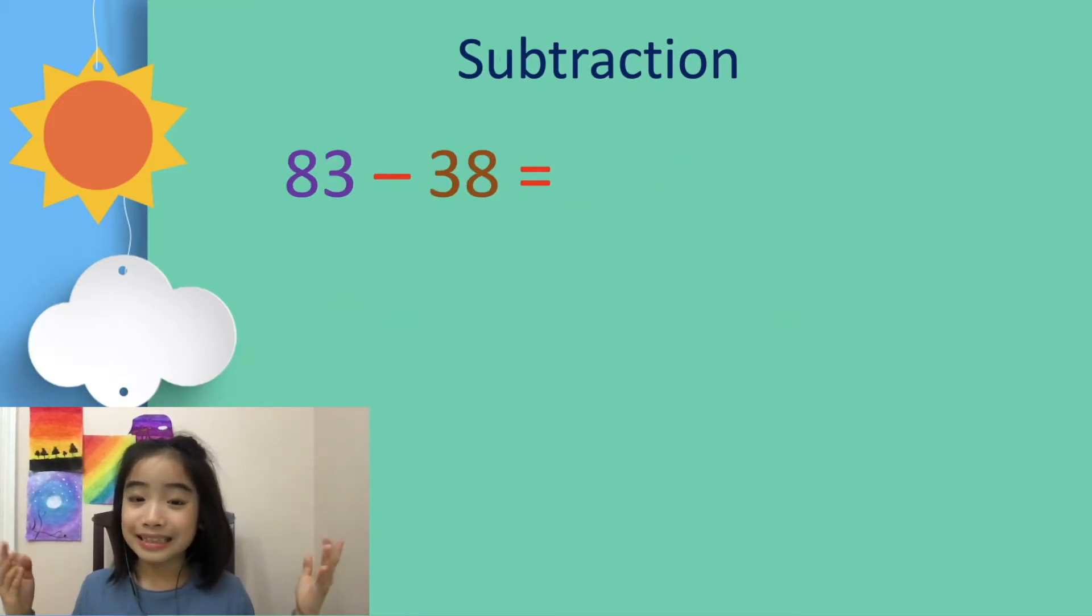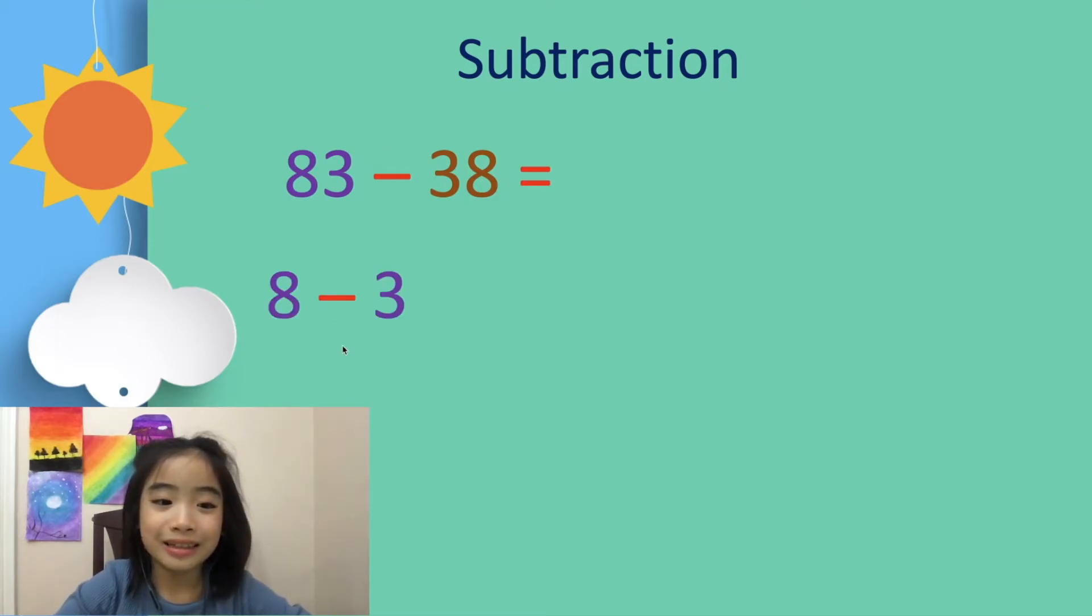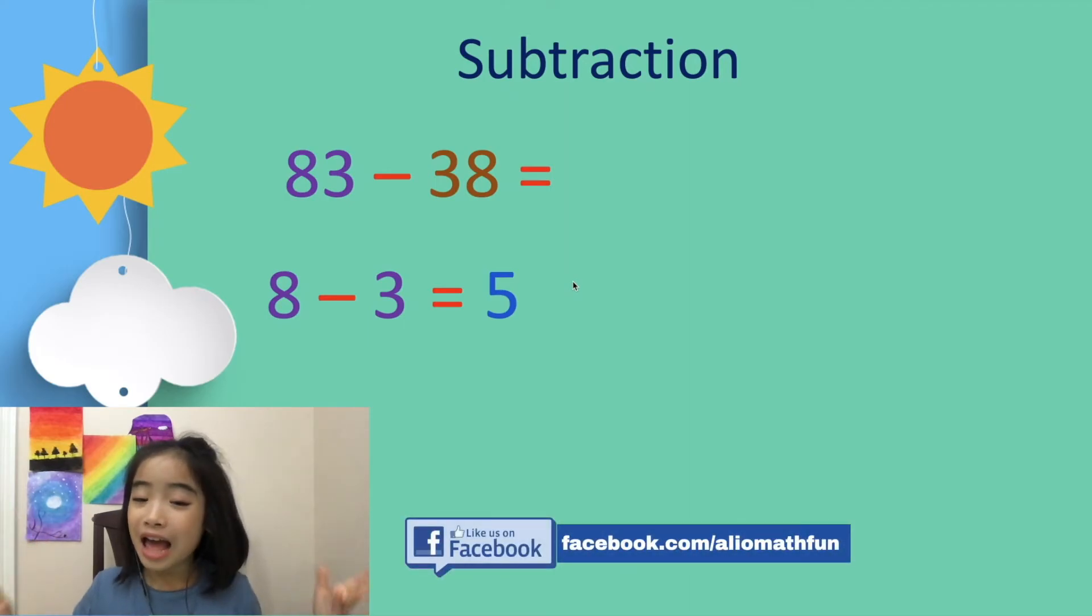Next, let's learn the subtraction trick. First, we have 83 minus 38. We have 8 minus 3 equals 5. Now, let's multiply 5 by 9. 5 times 9 equals 45. And the answer is 45. That was way easier than using the regular form.